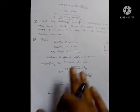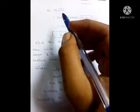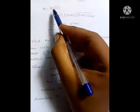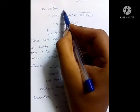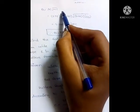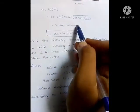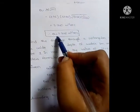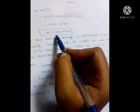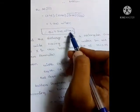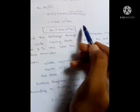Now calculate discharge: Q equals A·C·√(m·i). Substituting all values — area, C value of 33.80, m and i — the discharge Q comes out to 2.340 meter cube per second.